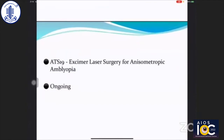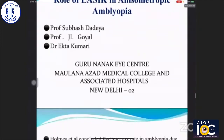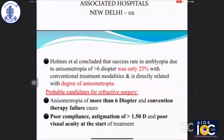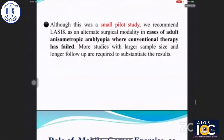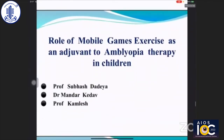ATS-19 is examining laser surgery for anisometropic amblyopia — this is an ongoing study. We conducted a thesis regarding the role of LASIK in adult anisometropic amblyopia. Horne et al. concluded the success rate in amblyopia due to anisometropia of more than six diopters was only 25% with conventional modalities, directly related to degree of anisometropia. Probable candidates for refractive surgery may be anisometropic amblyopia cases with more than six diopters, conventional therapy failures, poor compliance, and poor visual acuity at the start of treatment — but this should be tried only as a last resort. We recommend LASIK as an alternate surgical modality in cases of adult anisometropic amblyopia where conventional therapy has failed.